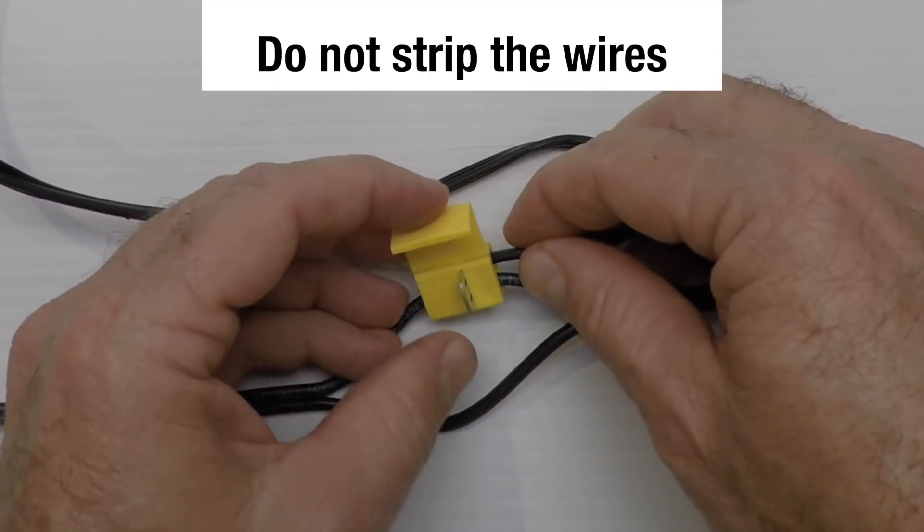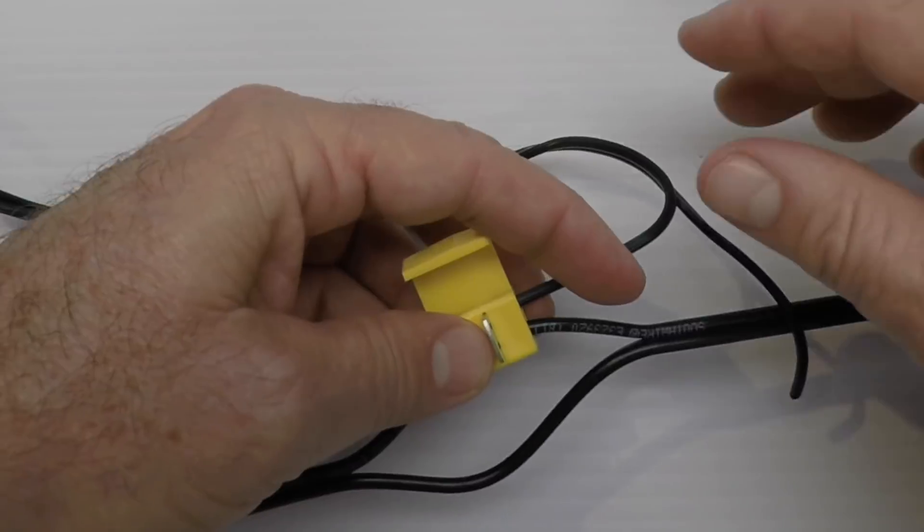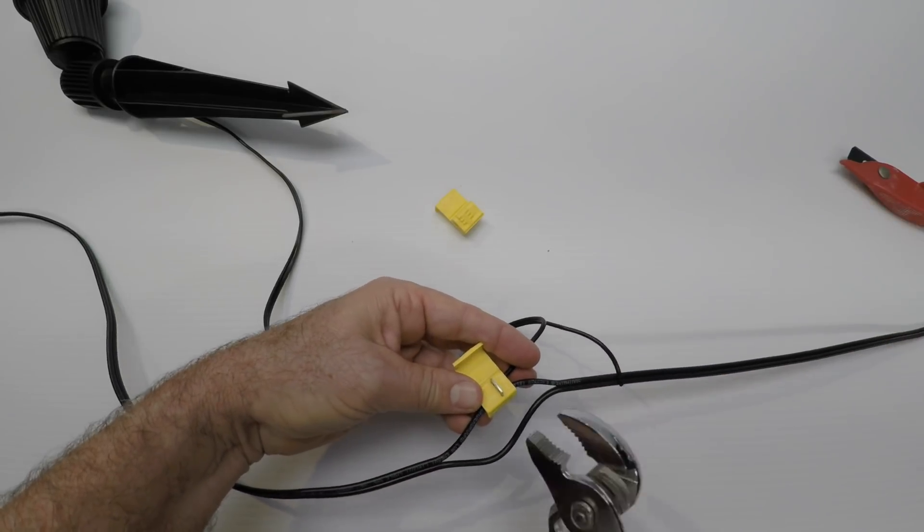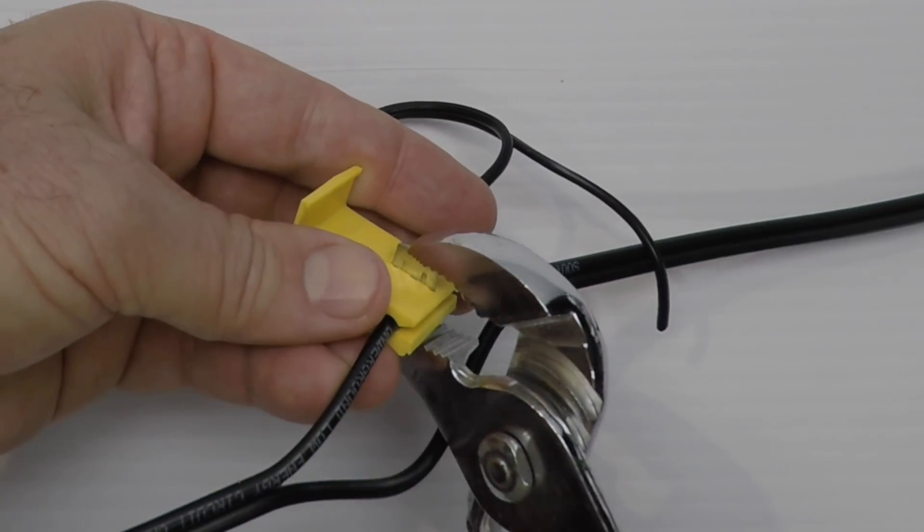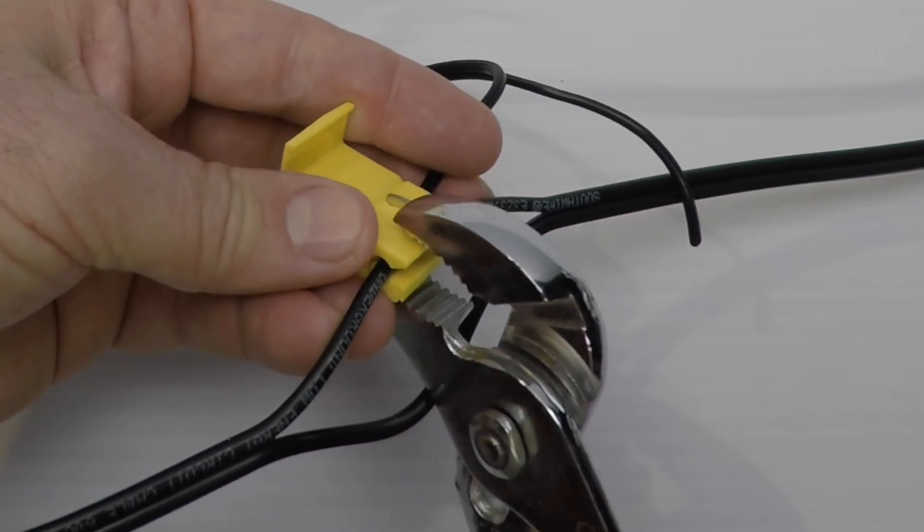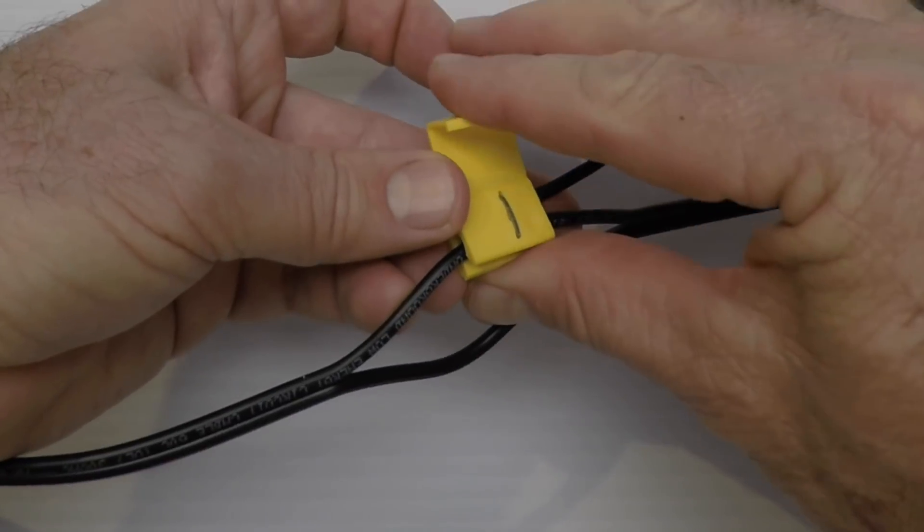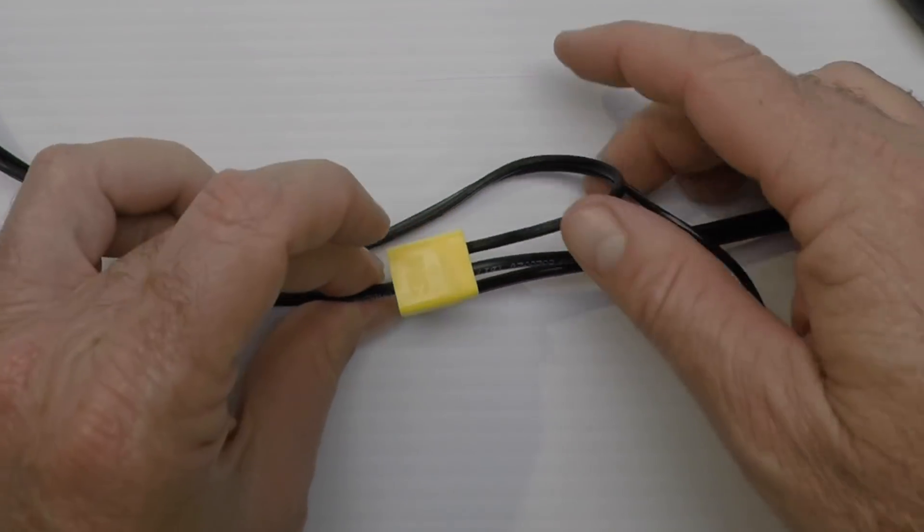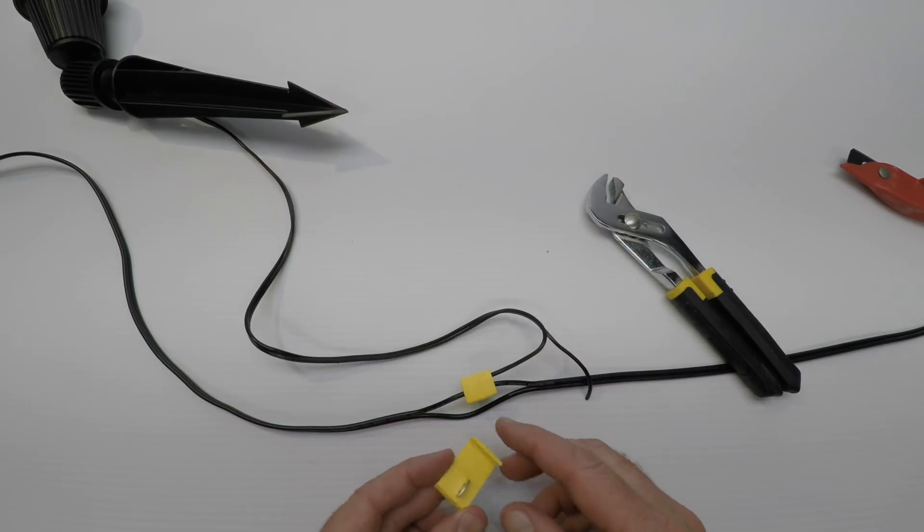Just put the wire in the hole, hold it in there. Then what we're going to do is take the pair of pliers and push this part down inside. Watch - just push it down, push it flat. Gentle, don't go crazy. There it goes, it's nice and flat. Then take the top and close it.